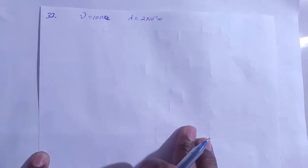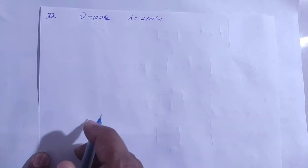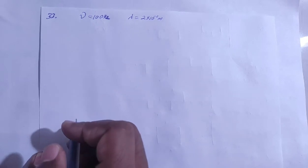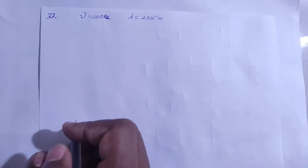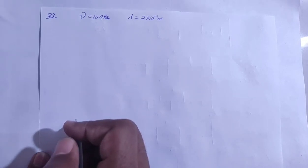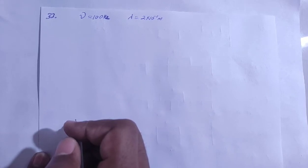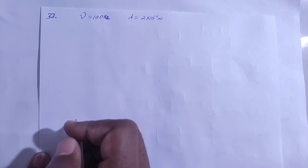SC Verma Solution, Chapter 15: Wave Motion and Waves on String, Question 33. Two waves each having a frequency of 100 Hz and a wavelength of 2 cm are travelling in the same direction on a string. What is the phase difference between the waves if the second wave was produced 0.015 seconds later than the first one at the same place?